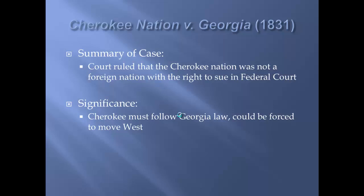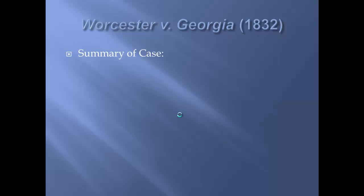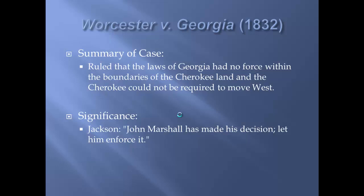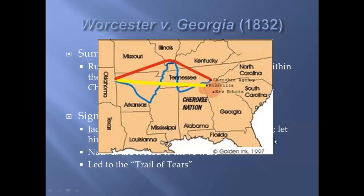John Marshall also said that if someone could sue on behalf of the Cherokees as a US citizen, the Court would hear the case again. So one year later, Worcester — an American citizen — sued Georgia on behalf of the Native Americans. This ruled that the laws of Georgia had no force within the boundaries of Cherokee land and that the Cherokee Nation could not be required to move west. Andrew Jackson, who was president at the time, did not like that. He allegedly said, 'John Marshall has made his decision; let him enforce it.' He blatantly disregarded his responsibility to enforce court decisions, and natives were forced to move west, leading to the Trail of Tears.